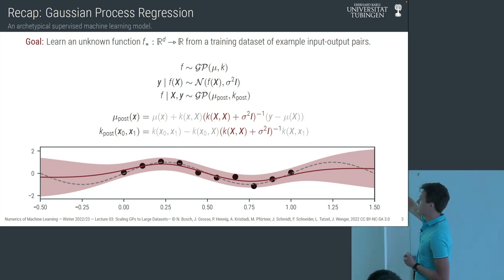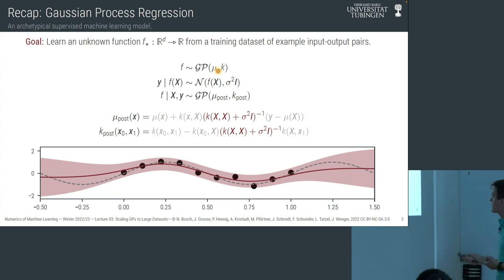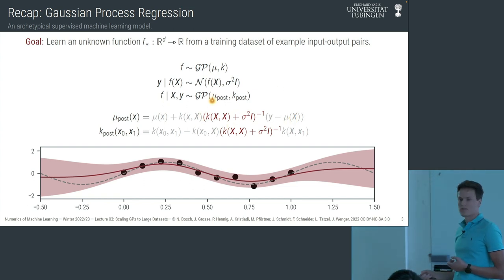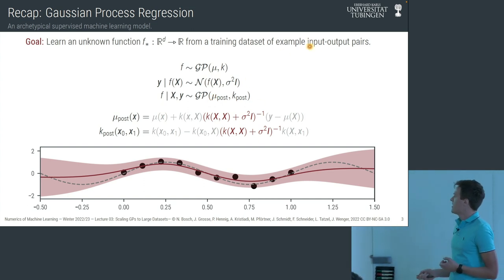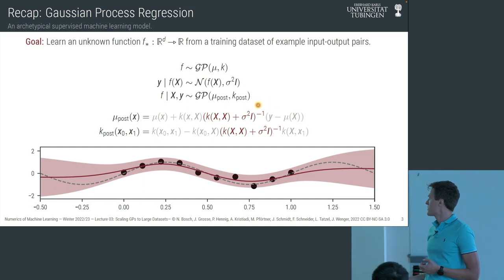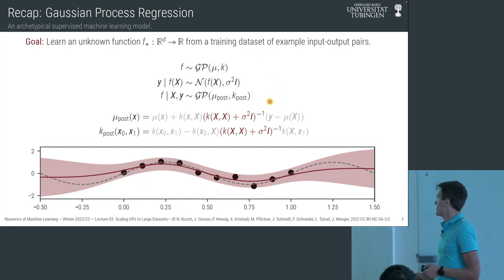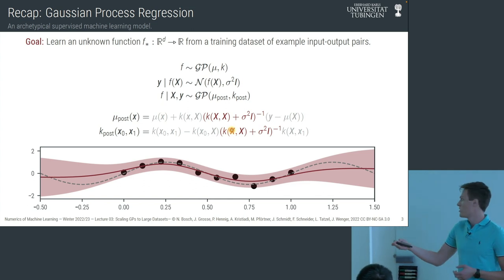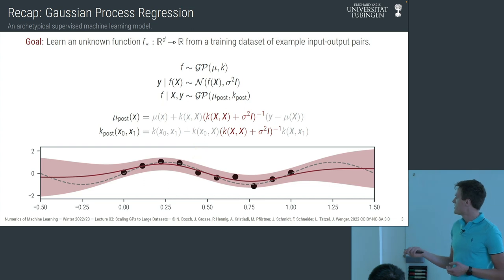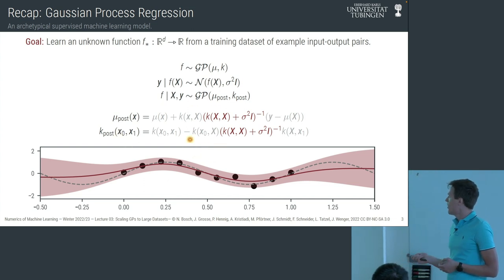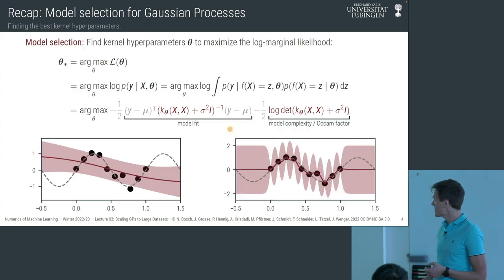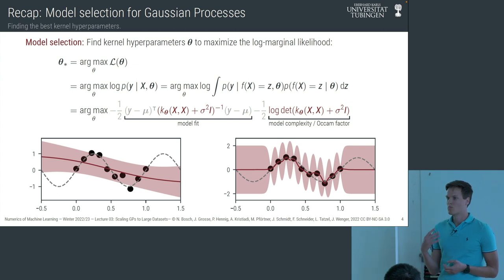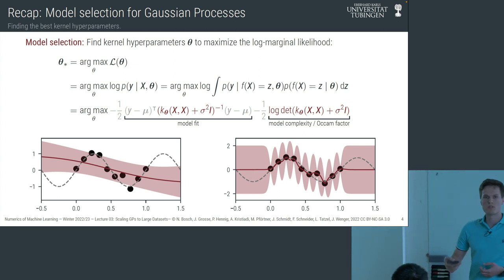Just as a reminder, this is what the Gaussian process posterior looks like. We have an error term between the data and our prior mean, which gets scaled by the inverse of the Gram matrix. The covariance also involves inversion of a matrix of the size of the data set. GP regression is two parts: computing the posterior and finding the kernel hyperparameters — doing model selection. The loss we optimize for GPs is the log marginal likelihood.